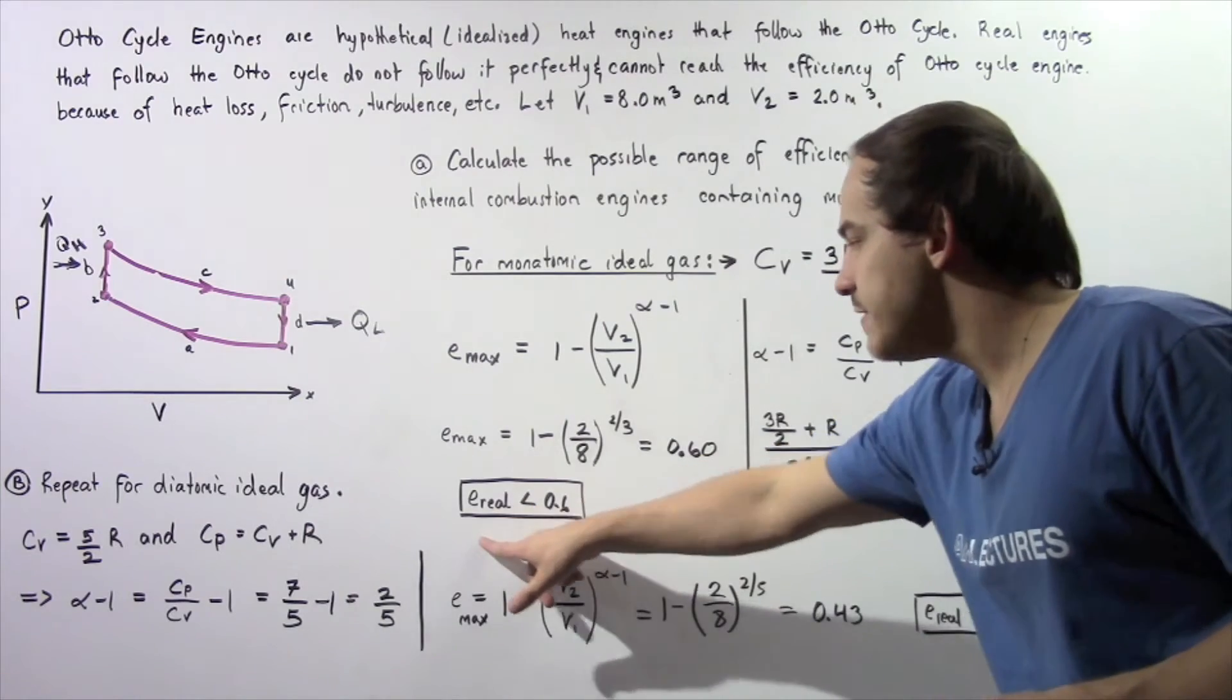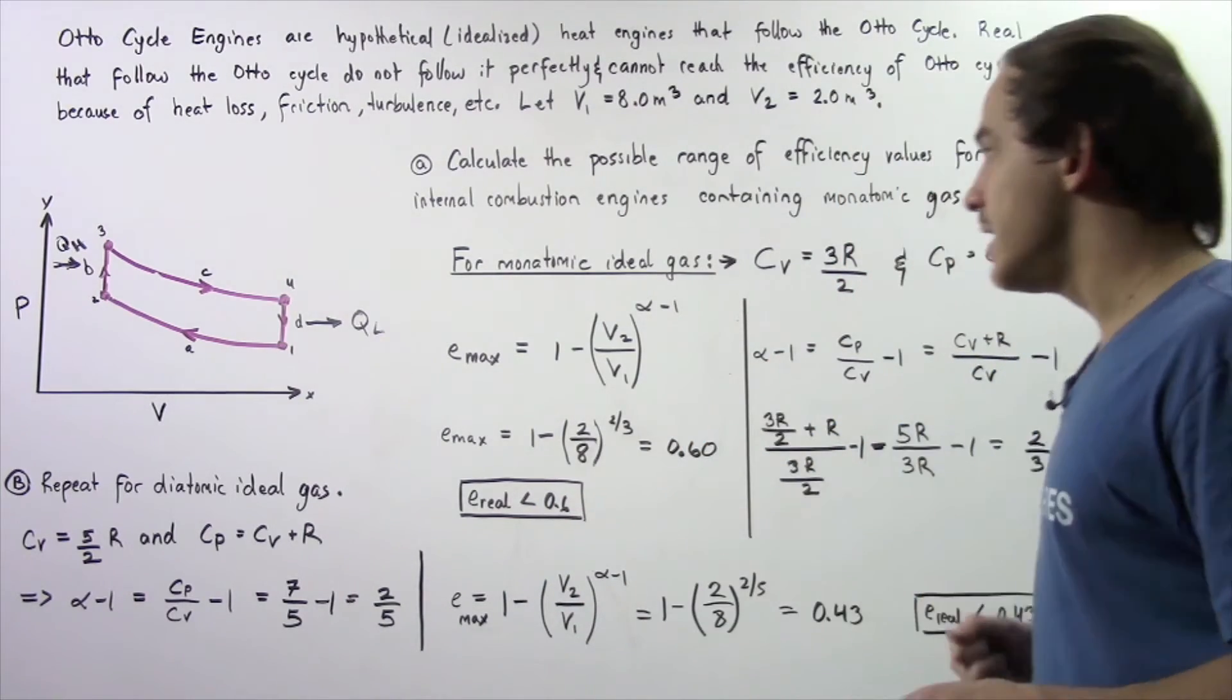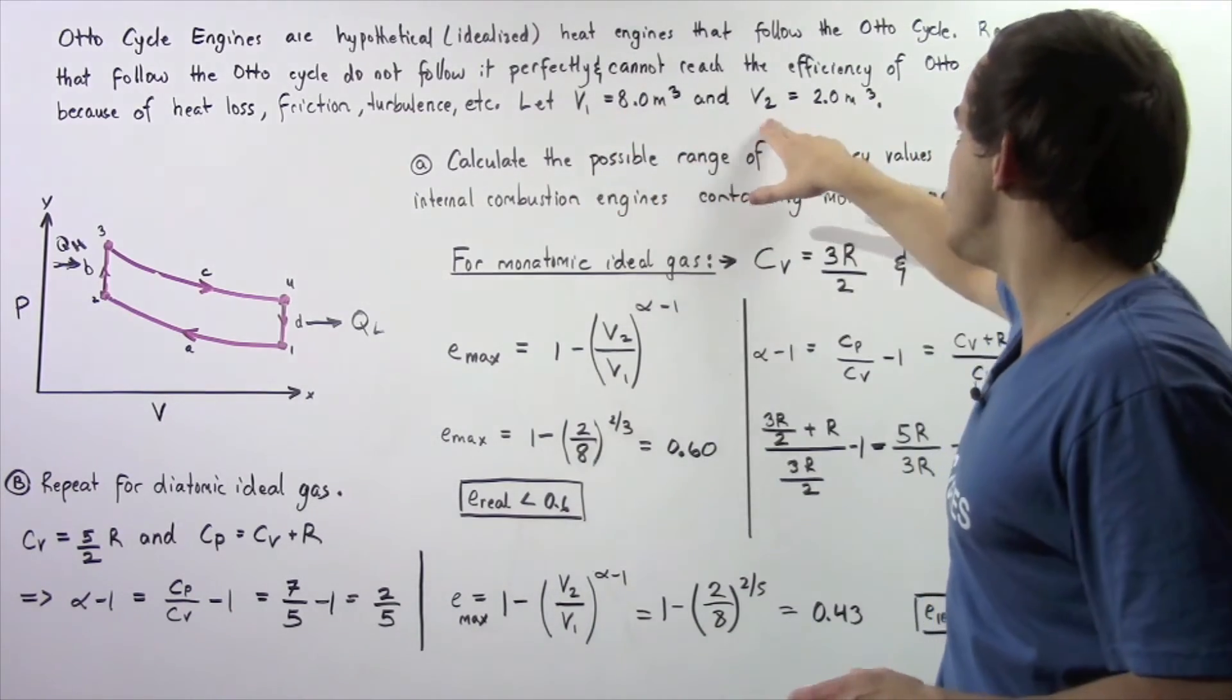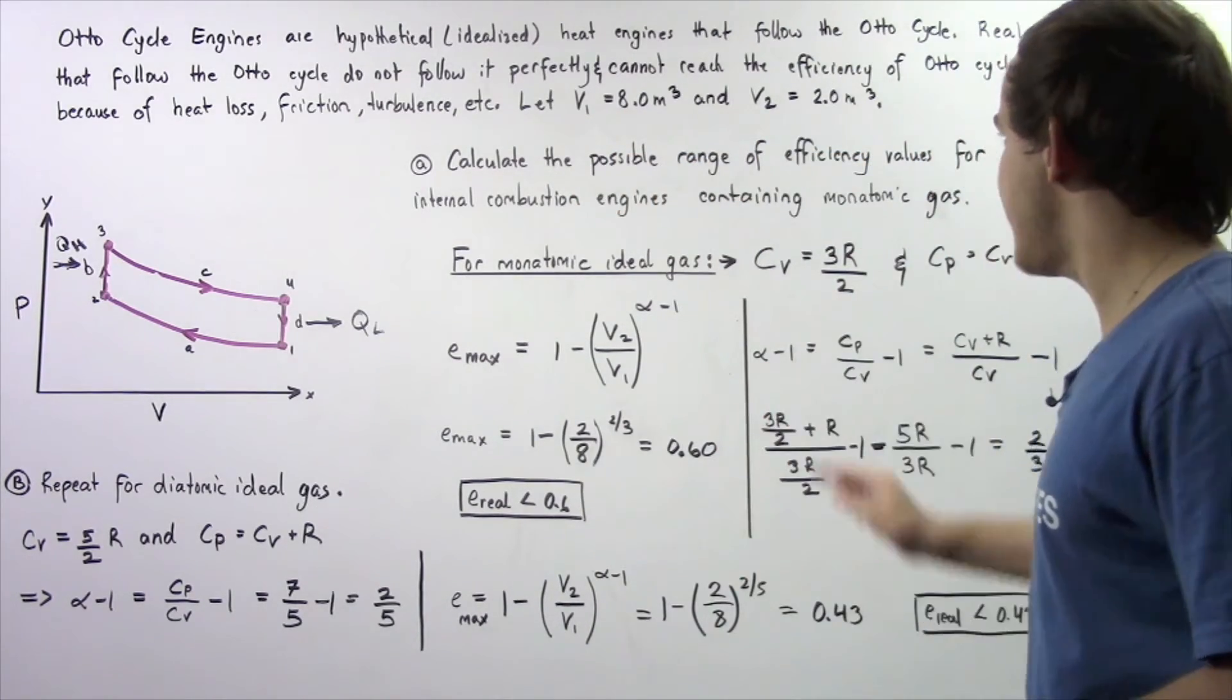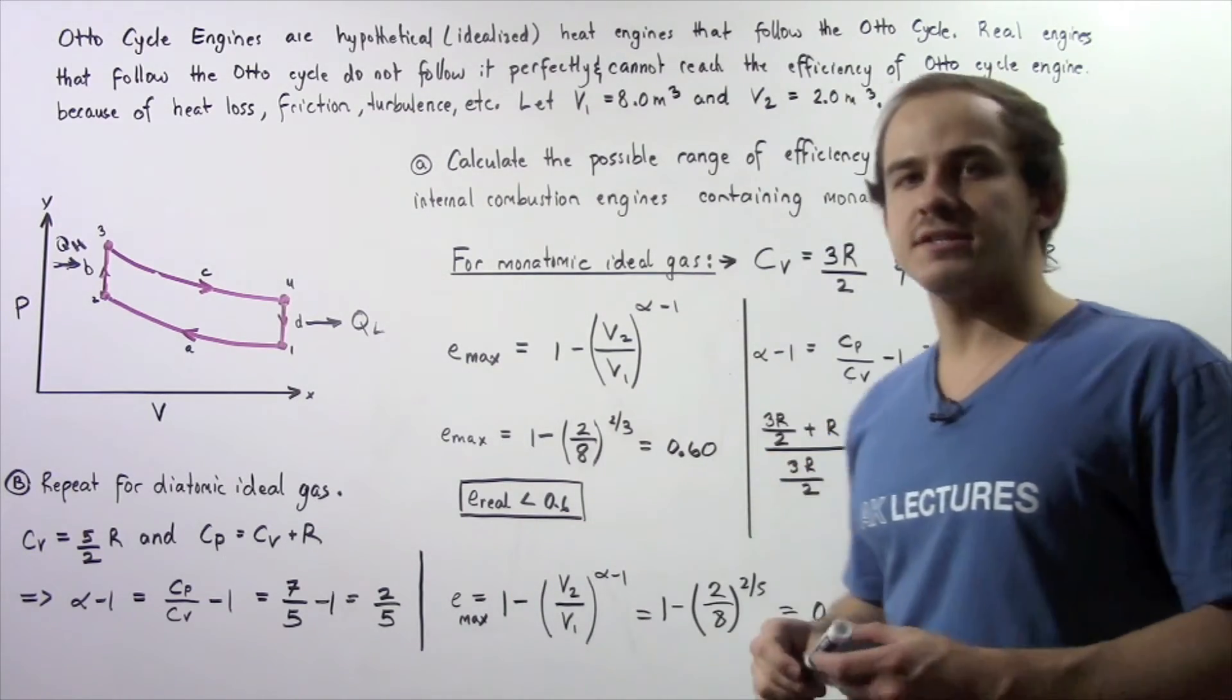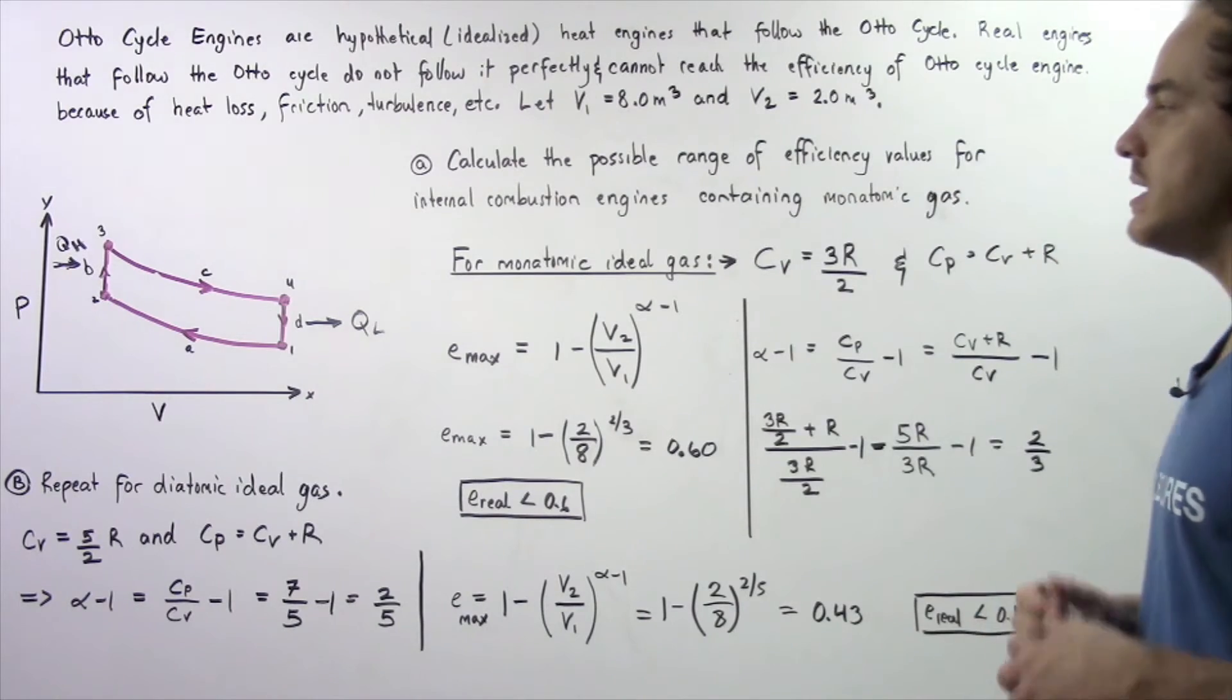So that implies the efficiency of a real heat engine that obeys the Otto cycle that has the following V1 and V2 values and which contains a monatomic gas has to be less than this quantity. Now let's move on to part B.